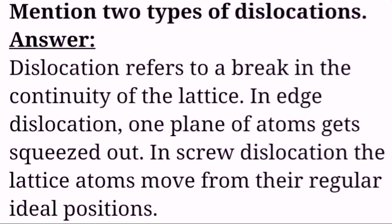Mention two types of dislocations. Dislocation refers to a break in continuity of a lattice. In edge dislocation, one plane of atoms gets squeezed out. In screw dislocation, the lattice atoms move from their regular ideal positions.